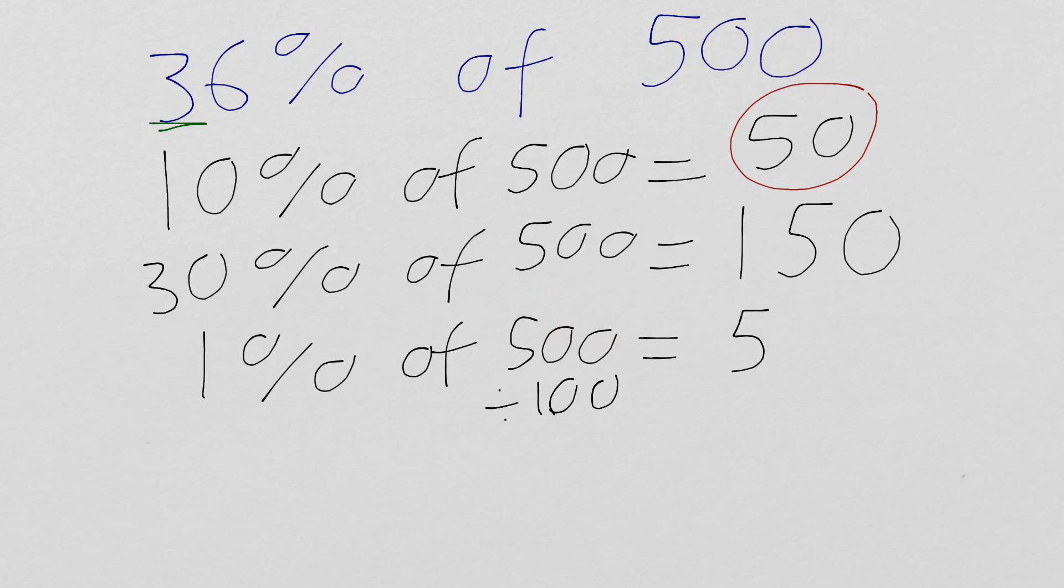So, if 1% is 5, and we need 6%, what have we done to 1 to make 6? Well, we've multiplied it by 6, haven't we? So, we're going to do the same thing to our amount. So, 5 multiplied by 6 gives us, of course, 30. And then, what we need to do is we need to add that 30, that 6%, to the 30% area of 150. So, 150, add that 30, gives us 180. And there we have 36% of 500 being 180.